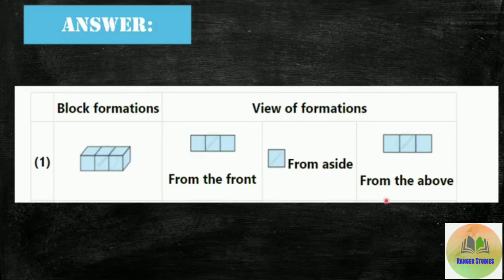So first number of block is given. The first view of formation is from the front. Front side is how to see the front. Then from a side. Side is how to see the front. And from the above. Means, upper side se ho kaise dikhega.